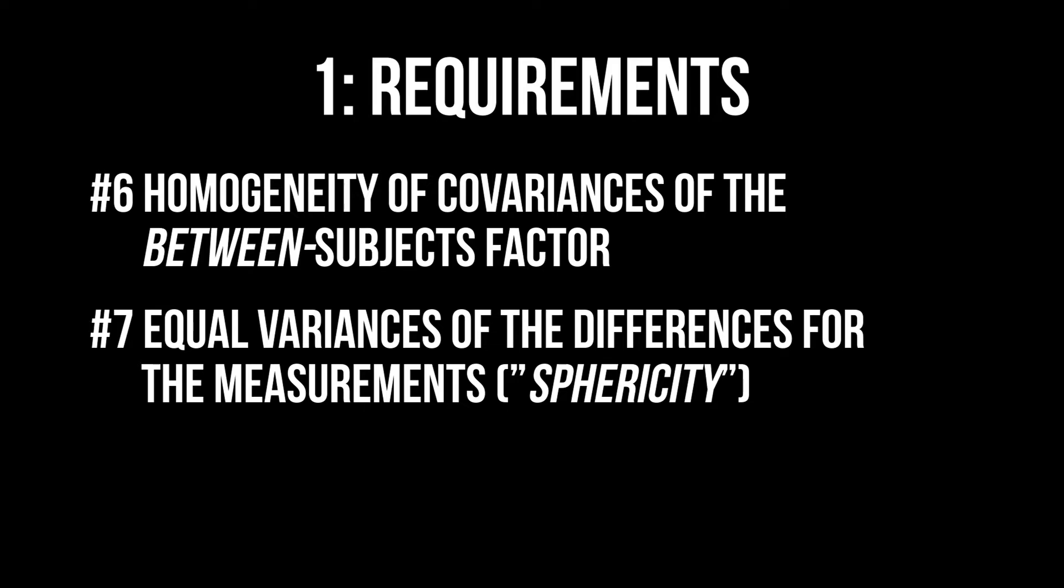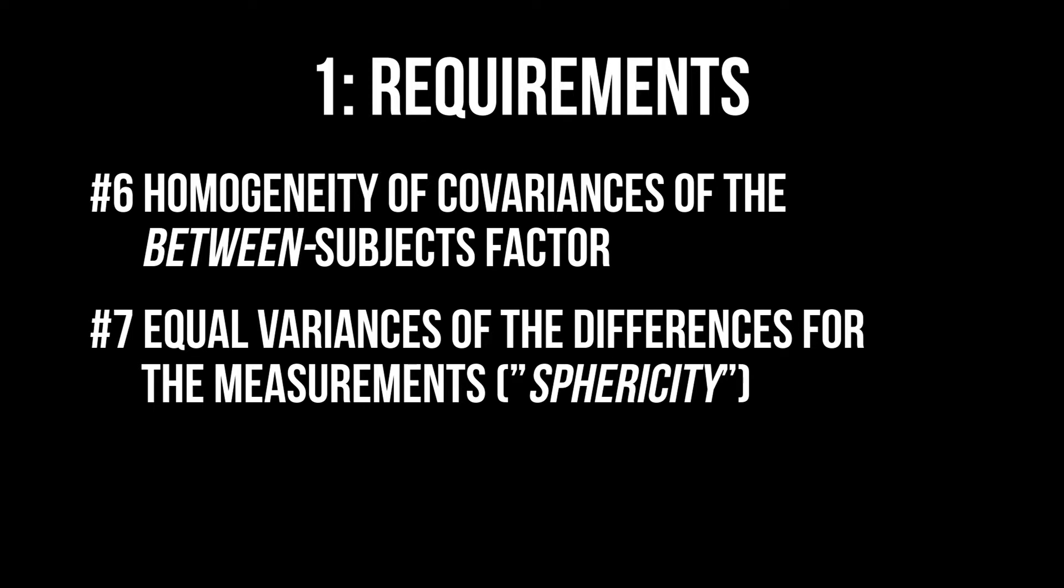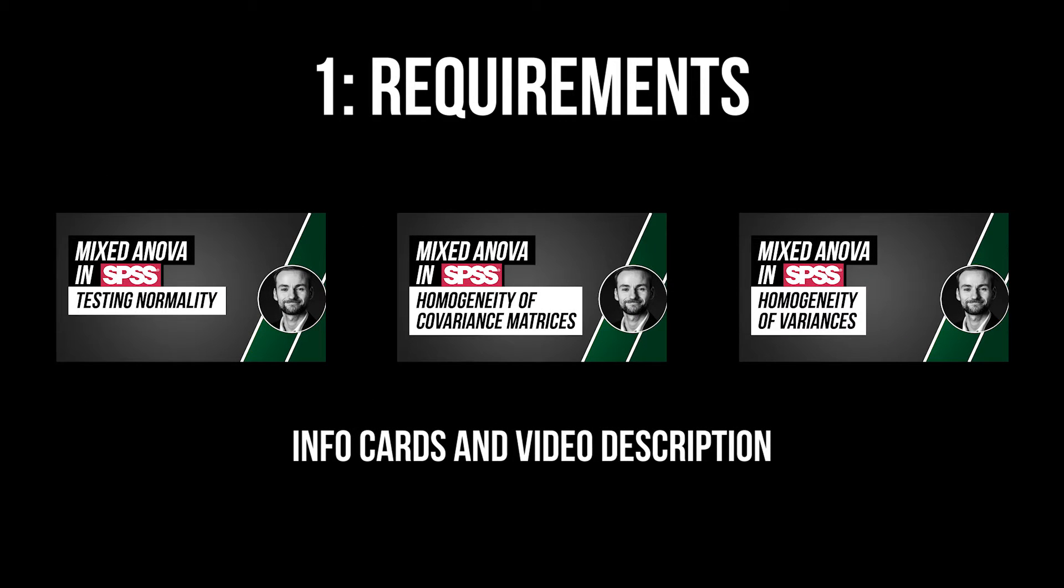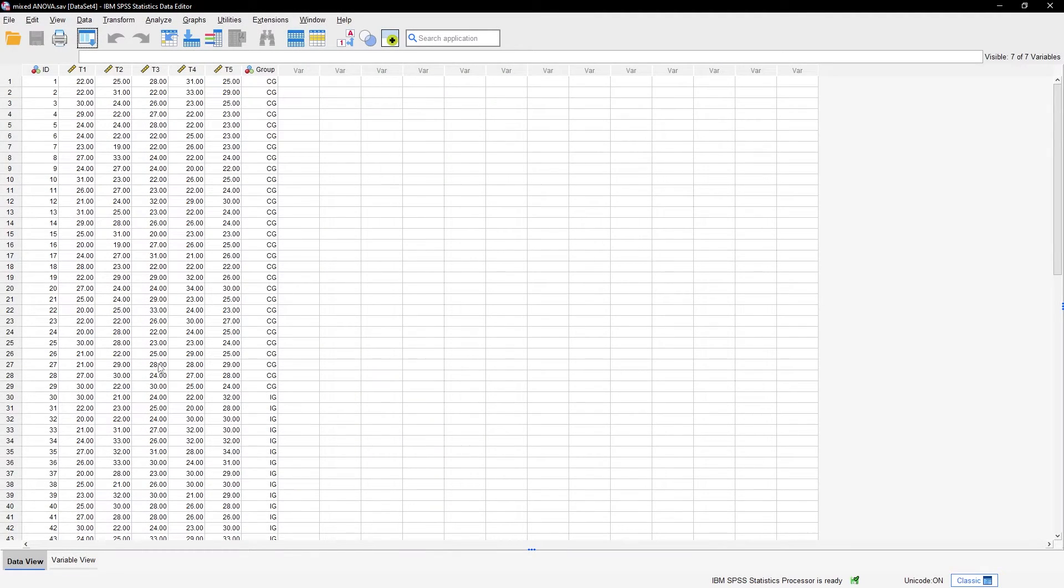And finally, equal variances of the differences for the measurements, also called sphericity, but only for three or more measurements over time. The requirements 4 to 6 are shown in separate videos to keep this one as short as possible. The correction of the violation of sphericity influences the model results and is part of the mixed ANOVA calculation in this video.